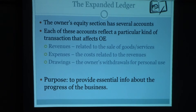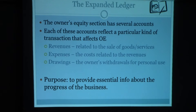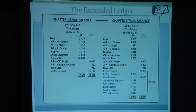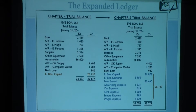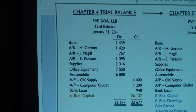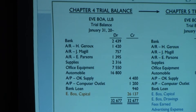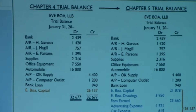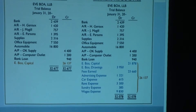The purpose behind this is to provide essential information about the progress of the business during the fiscal period. A fiscal period is any period at least a month long — you can have a monthly, quarterly, or annual fiscal period — and the purpose is to understand what is happening during that period as far as revenues and expenses are concerned. You can see from this slide that the ledger has been expanded: on the left side there is the trial balance ending on the capital account, and on the right side the capital account has been expanded to include revenues, expenses, and the owner's drawings accounts.